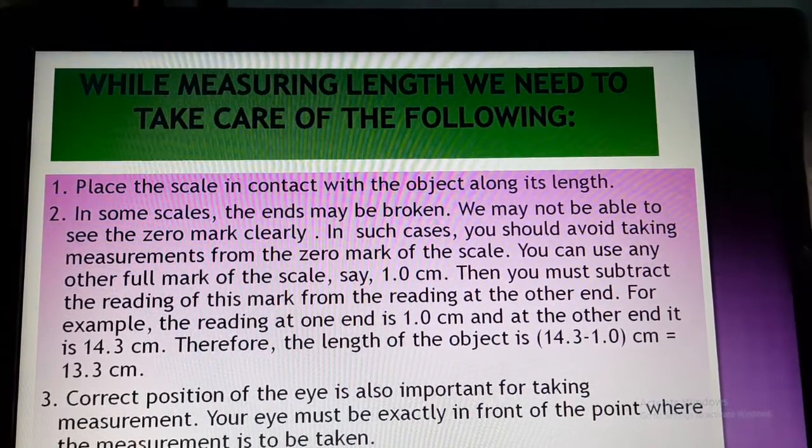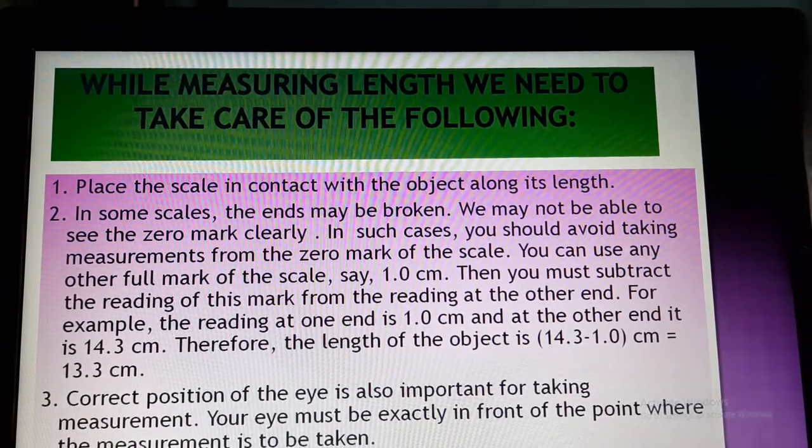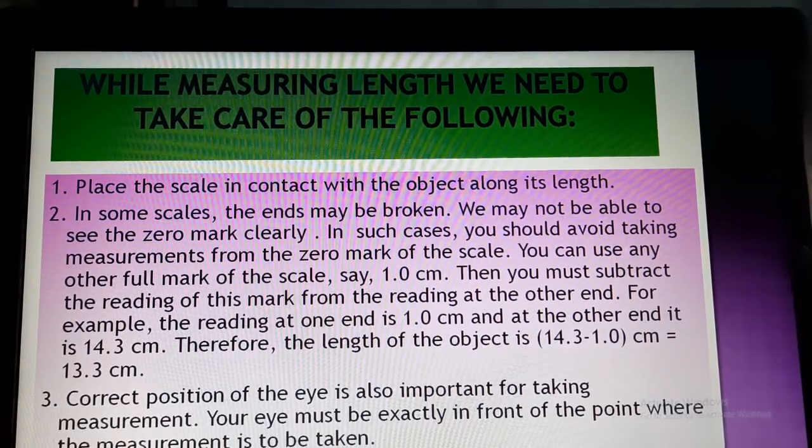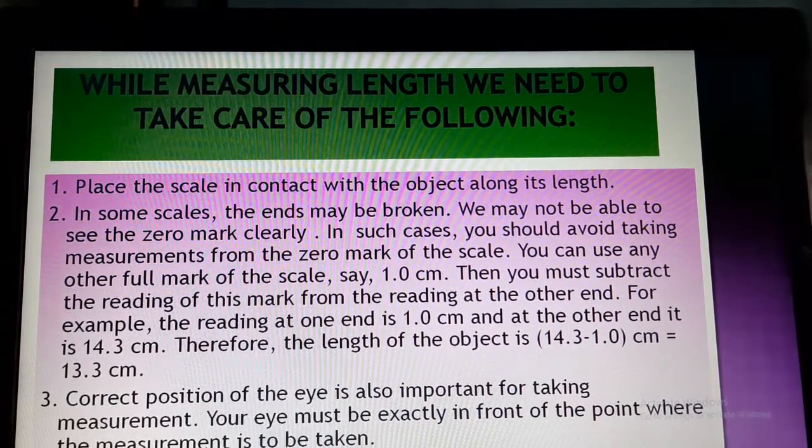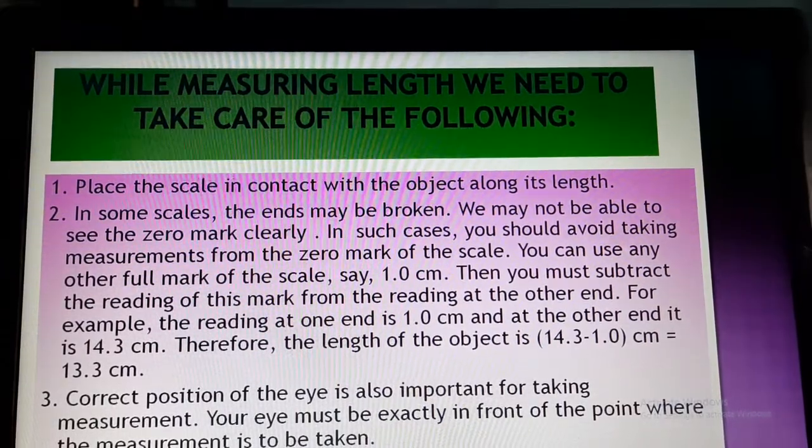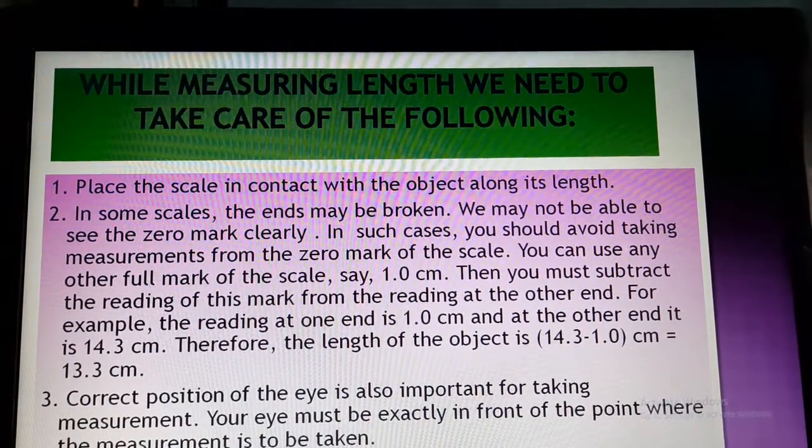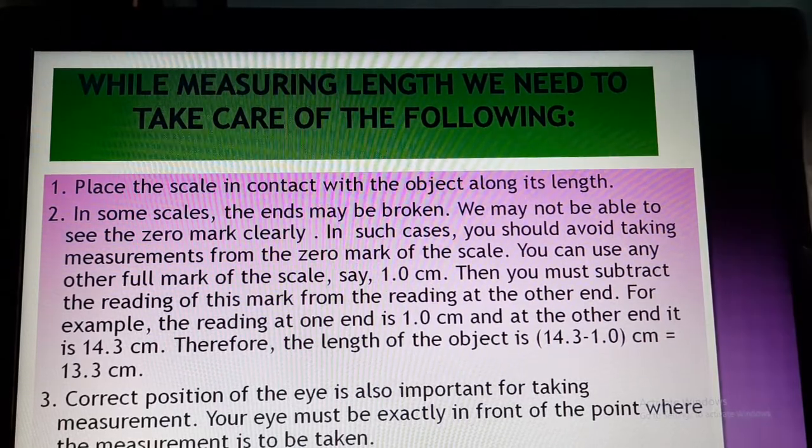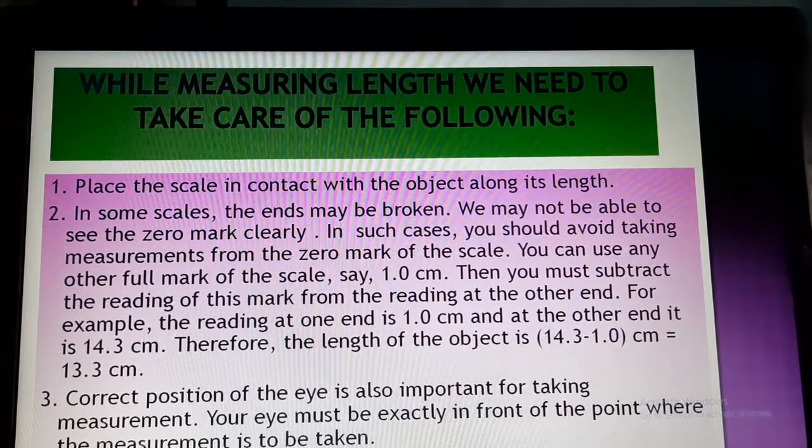Then we do these things but whenever we are writing those points point wise then we need to understand. I am explaining it once more to you that whenever we are measuring any object by the help of a scale, our eyes should be in straight contact. So place the scale in contact with the object along with its length. The scale should be placed on the object along with its length straight.